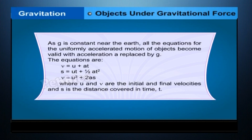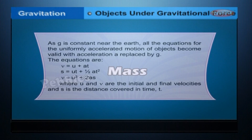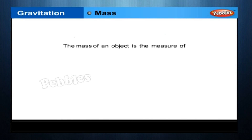As g is constant near the earth, all the equations for uniformly accelerated motion of objects become valid with acceleration a replaced by g. The equations are shown above, where u and v are the initial and final velocities and s is the distance covered in time t.